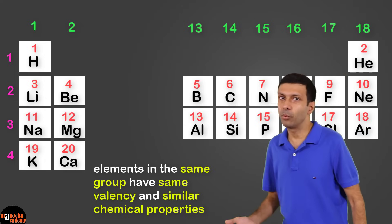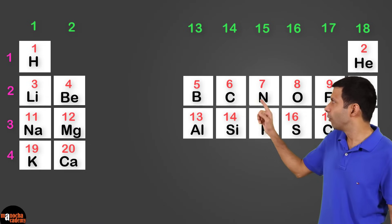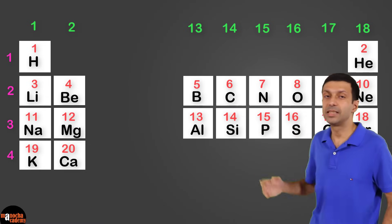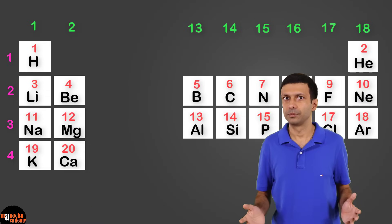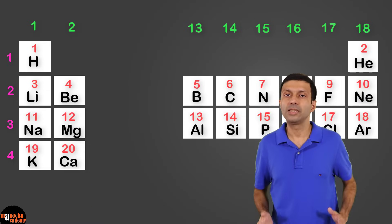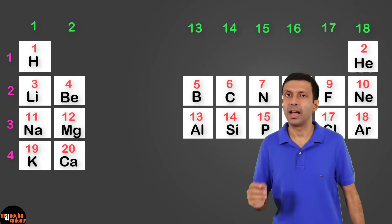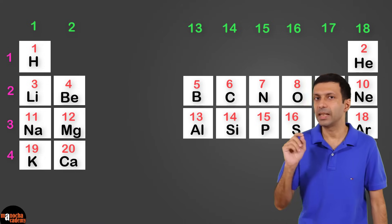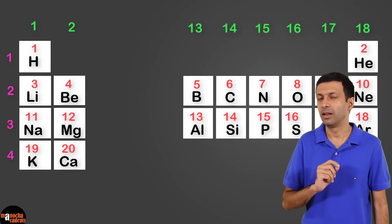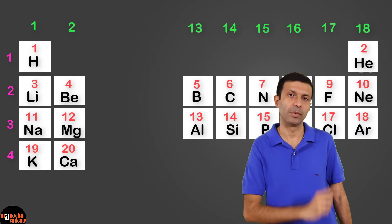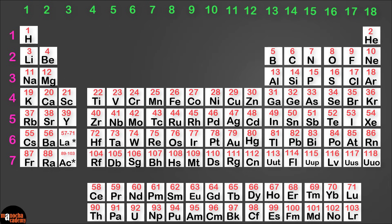Now, the group numbering that we saw from 1 to 18 is the new scheme. There is an older scheme that uses Roman numerals and alphabets A and B. Let's take a look at the old scheme as well. The new scheme has group numbers from 1 to 18.